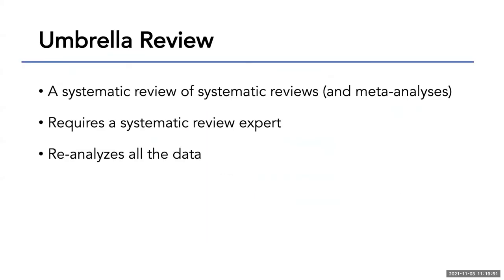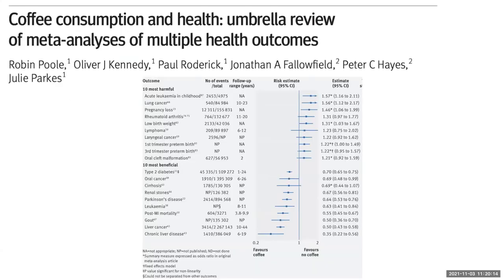We're now getting to a point where there are so many systematic reviews — 80 published every day — that we are doing systematic reviews of systematic reviews, which is called an umbrella review. These tend to require a systematic review expert because they are re-analyzing all of this data. This is an example of a meta-analysis of other meta-analyses — it hurts my head, but it can be really helpful because we need to look at umbrella reviews in order to get a better sense of what's out there in the literature.